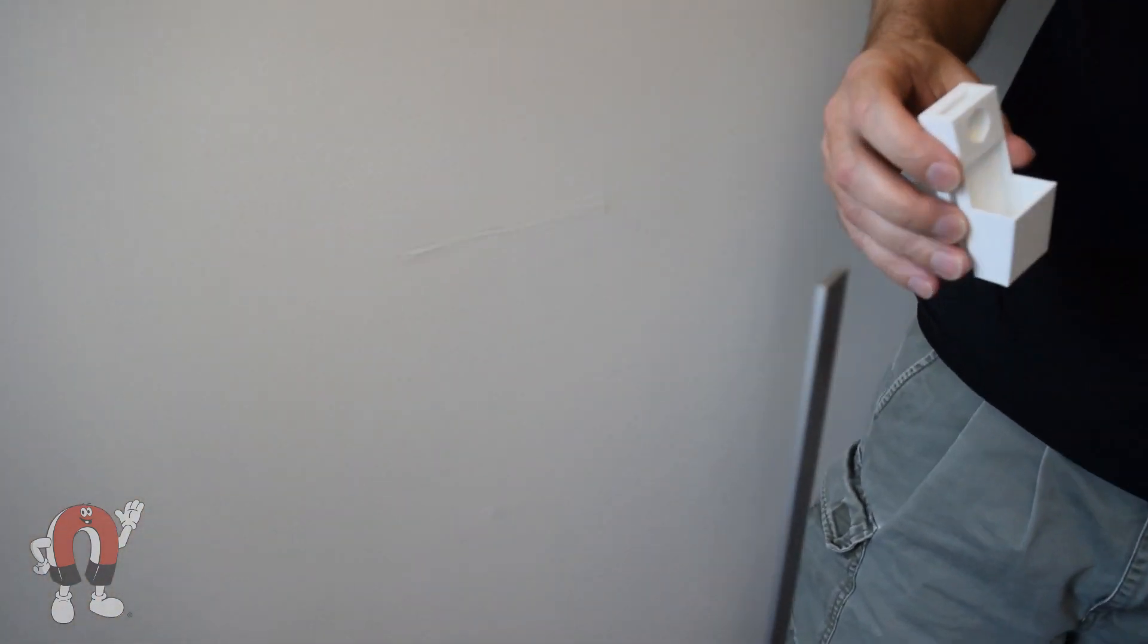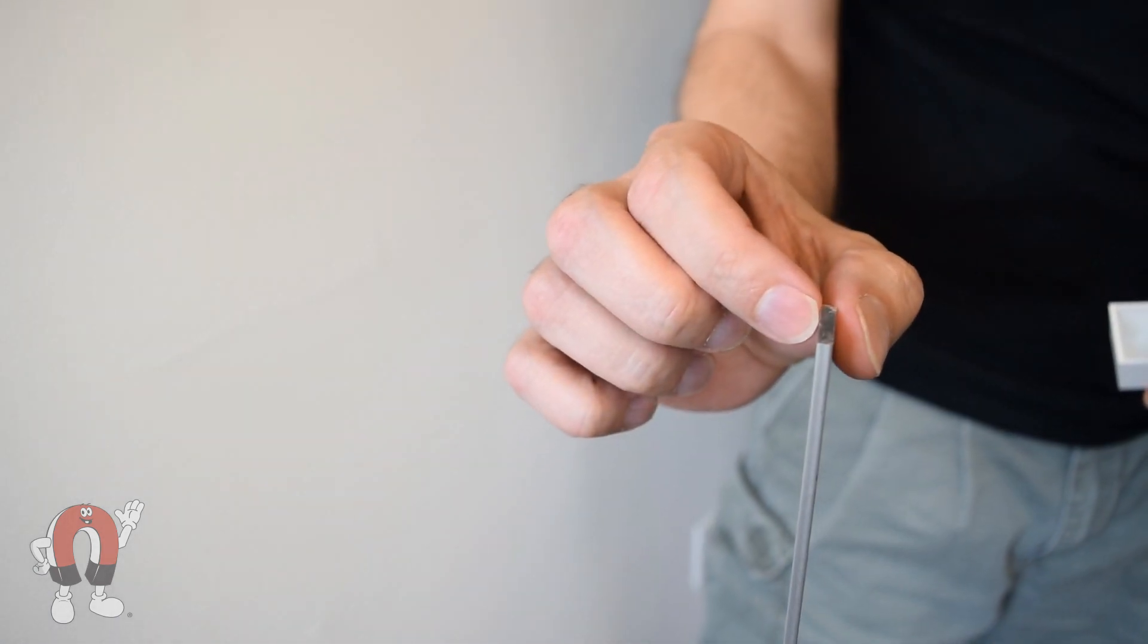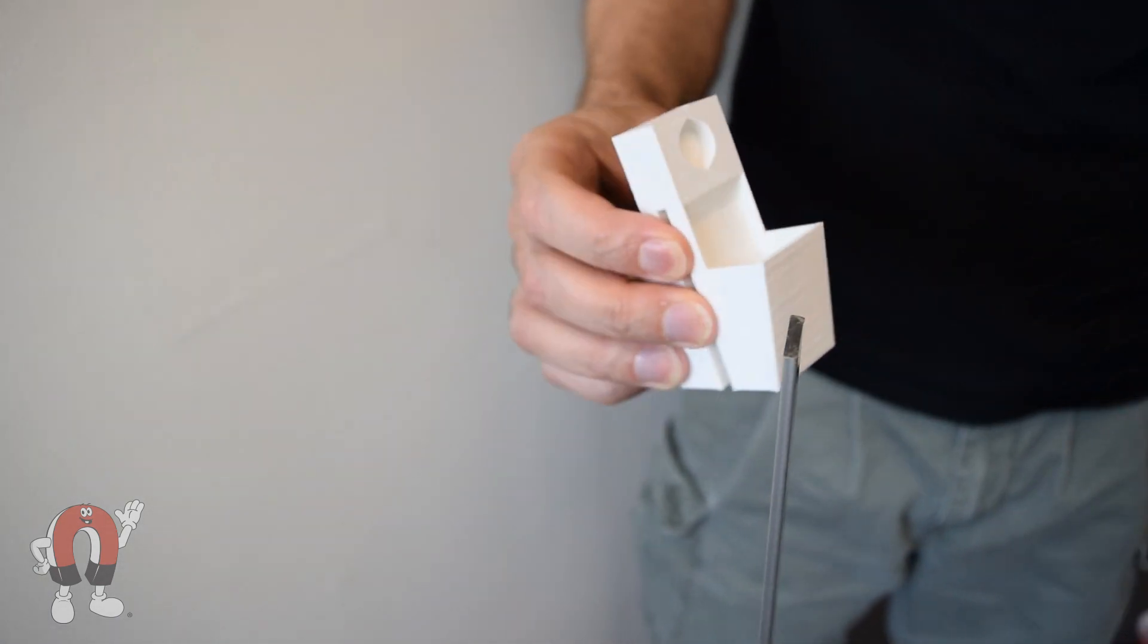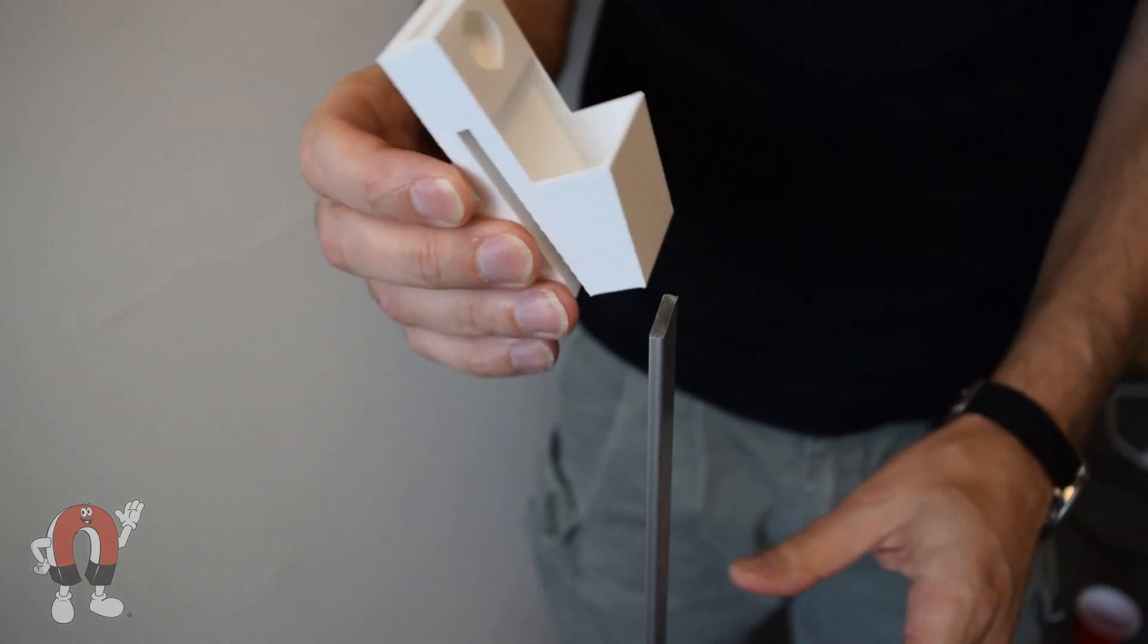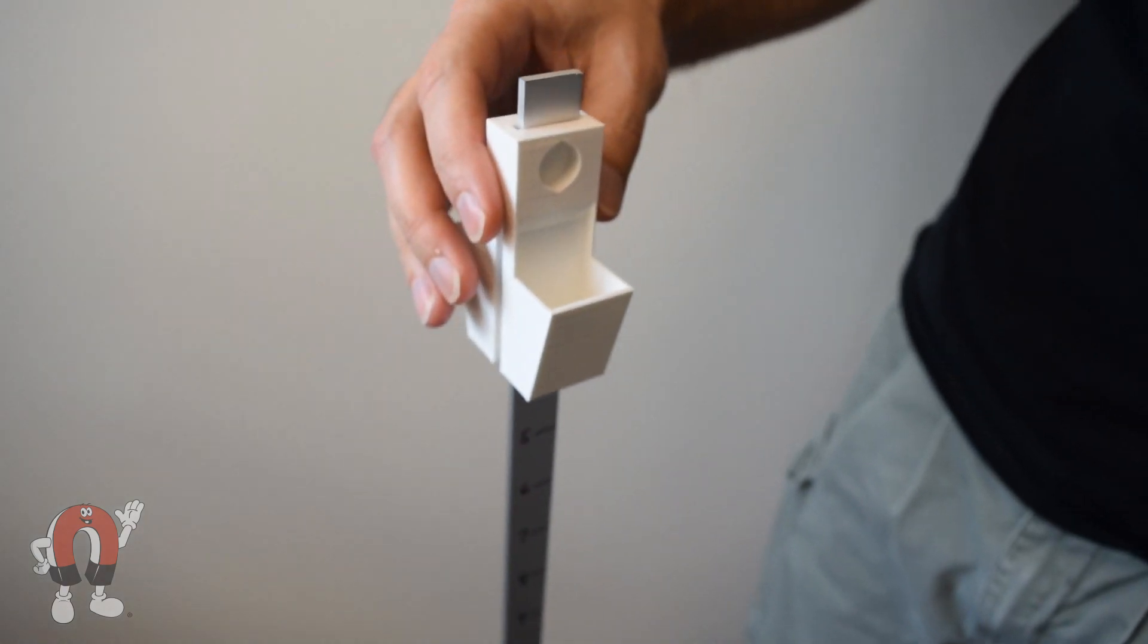We mounted a long aluminum extrusion vertically. This aluminum is one-eighth of an inch thick. We created a 3D printed trolley that slides down it.